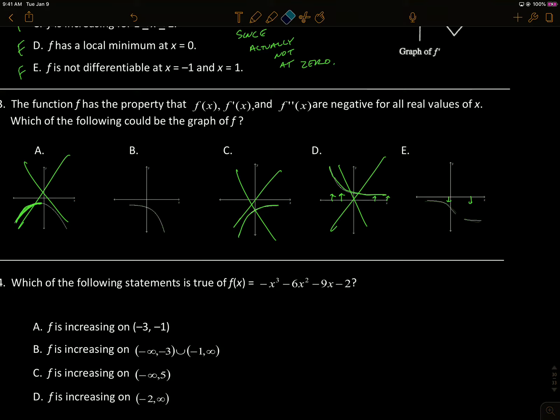And f double prime is always negative on B because it's always concave down. So B is our winner.